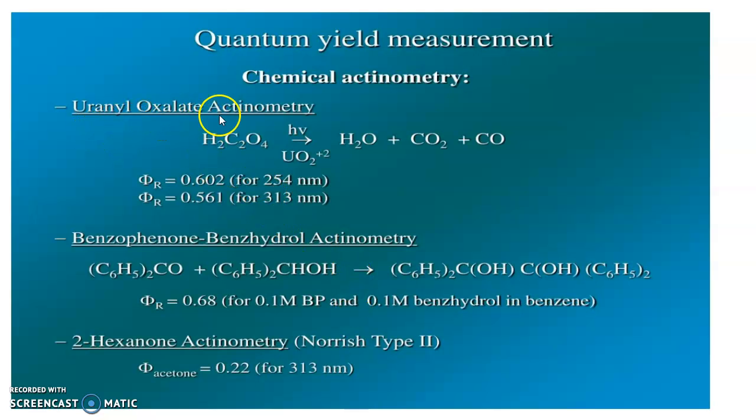For example, we have uranyl oxalate actinometer as an example in which we are taking an oxalic acid that is COOH COOH, that is H2C2O4, when it is subjected to H nu or photon radiation in the presence of UO2 2+ ion we will get water, carbon dioxide and carbon monoxide liberation. Quantum yield is given as quantum yield at 254 nanometer wavelength is 0.602 and at 313 nanometer wavelength the quantum yield is 0.561.